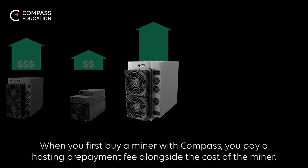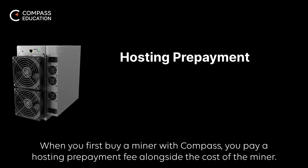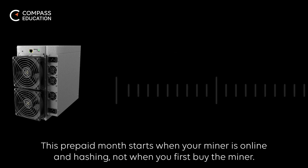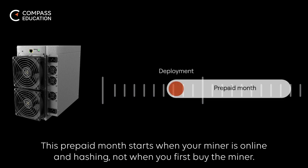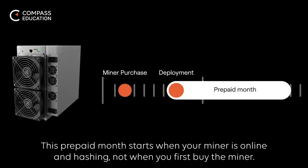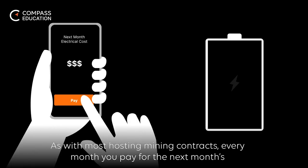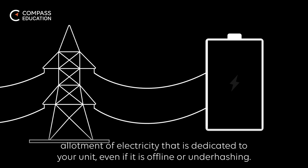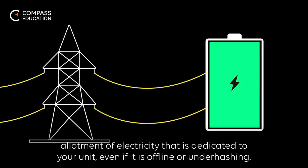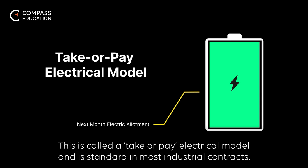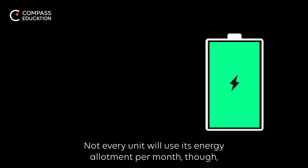When you first buy a miner with Compass, you pay a hosting prepayment fee alongside the cost of the miner. This initial fee covers your first month of hosting. This prepaid month starts when your miner is online and hashing, not when you first buy the miner. As with most hosting mining contracts, every month you pay for the next month's allotment of electricity dedicated to your unit, even if it is offline or under-hashing. This is called a take-or-pay electrical model and is standard in most industrial contracts.